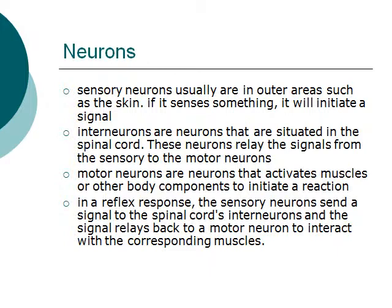Sensory neurons are usually in outer areas of the body, such as the skin. If they sense something, they will initiate a signal. Interneurons are situated in the spinal cord and relay signals from the sensory neurons. Motor neurons activate muscles or other body components to initiate a reaction.